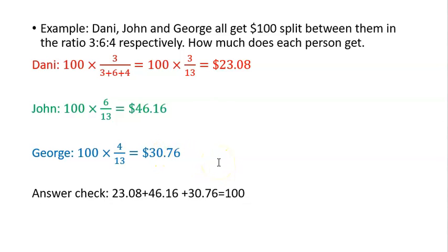Once you have all the values, check your answer by making sure all three values total up to the original amount. So 23.08 plus 46.16 plus 30.76 equals 100 dollars, proving we've done the ratio correctly.